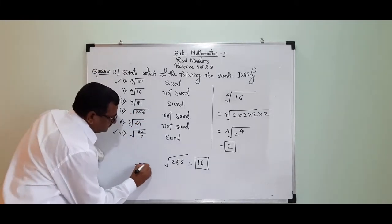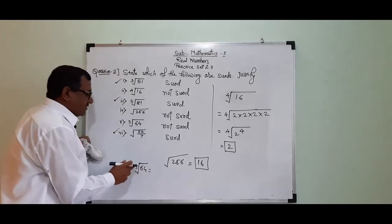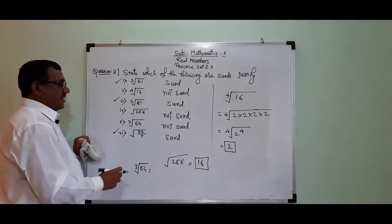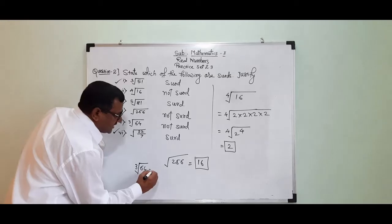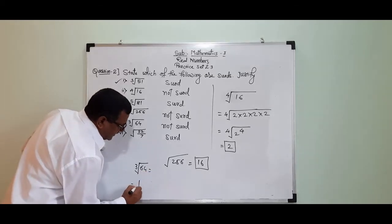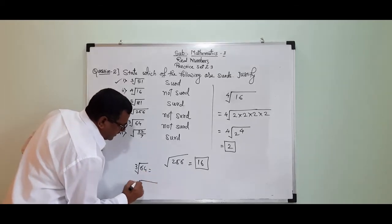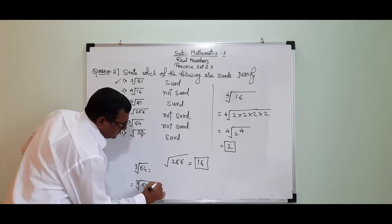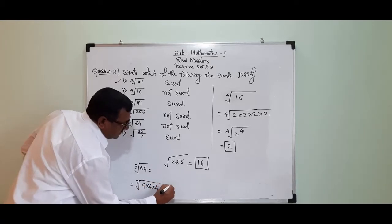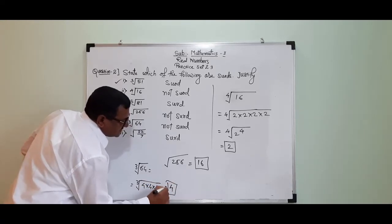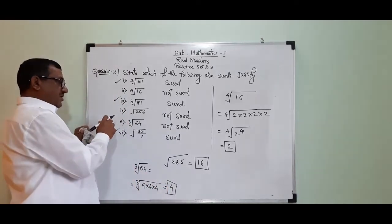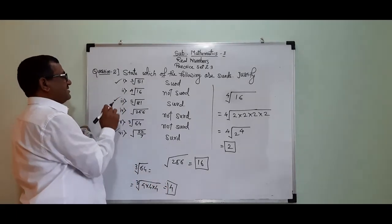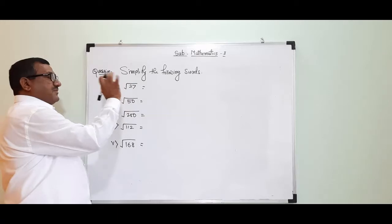The cube root of 64. That means the cube root of 64 is 4. The answer is 4. This is question 3.